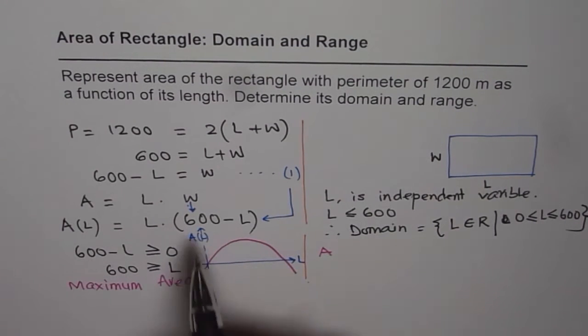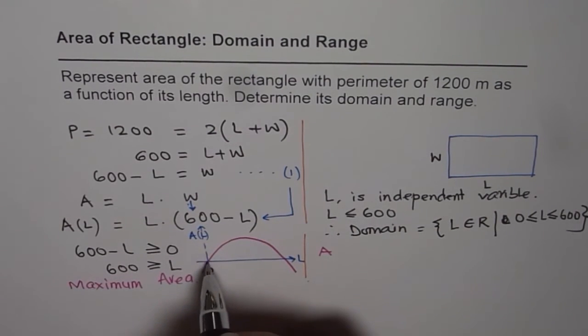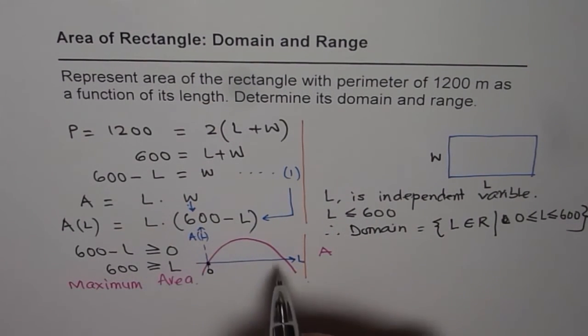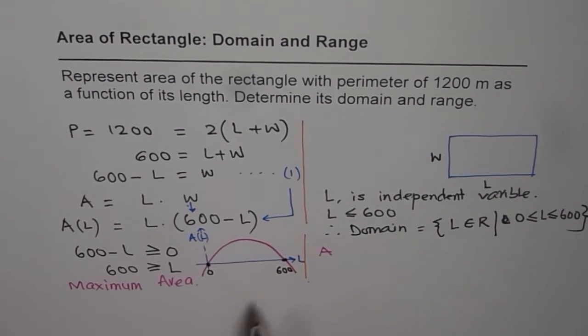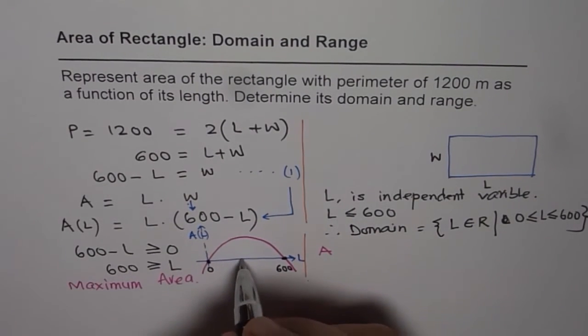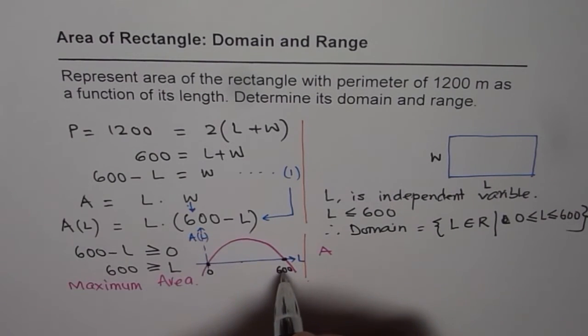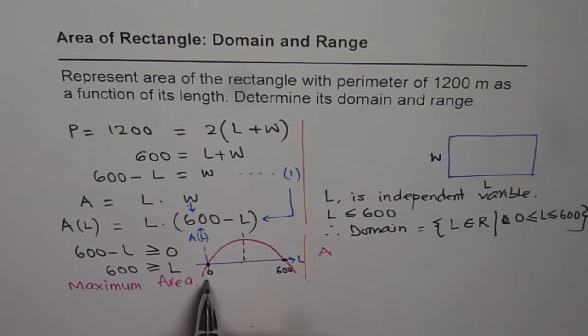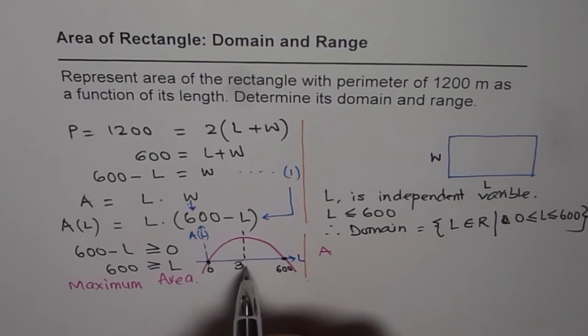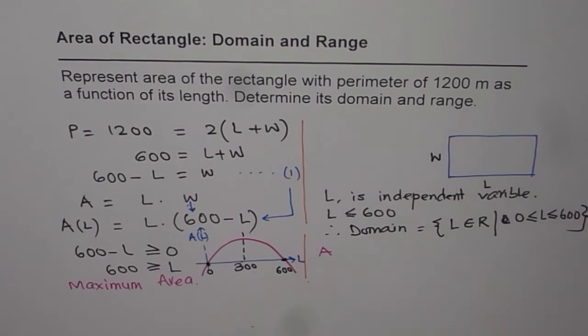So we see that if L is 0, then the area is 0. If L is 600, even then the area is 0. However, it will be maximum right in the center. That is from the symmetry of this parabola. So the center value is 600 plus 0, divide by 2, which gives us a value of 300. So area will be maximum when length is 300.